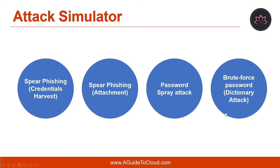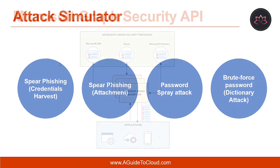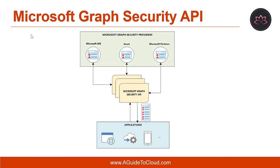A brute force password or directory attack against an organization is typically used after a bad actor has successfully enumerated a list of key users from the tenant. This attack focuses on letting you specify a set of passwords against a single user. Now let's understand the Microsoft Graph Security API. You can use Microsoft Graph Security API to connect Microsoft security products, services, and partners to streamline security operations and improve threat prediction, detection, and response capabilities.